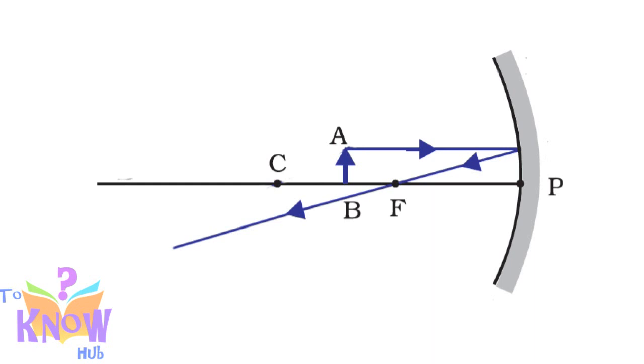Now this ray, it will reflect back following same path because this ray is actually perpendicular to mirror. Remember, this ray passing through center of curvature, or directed in the direction of center of curvature, always reflects back along the same path.